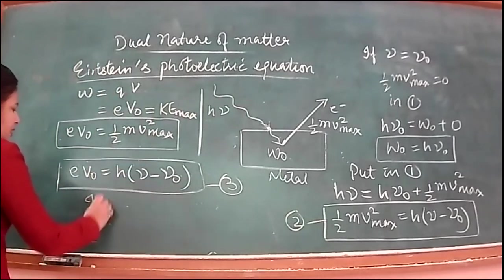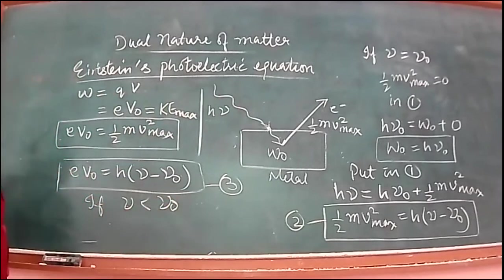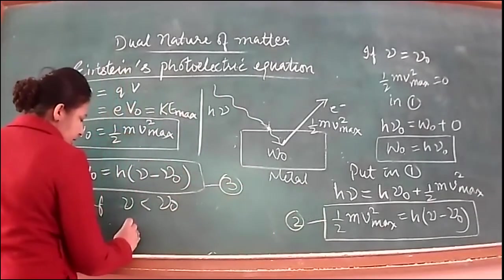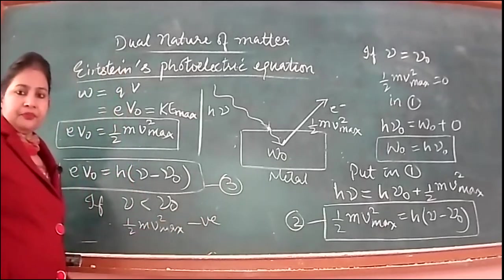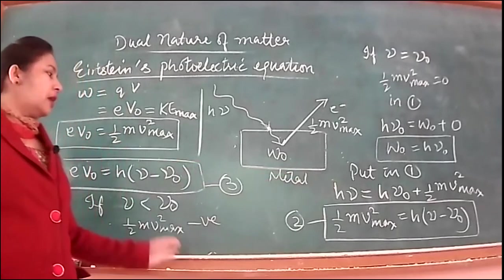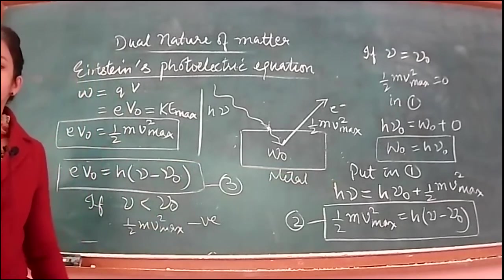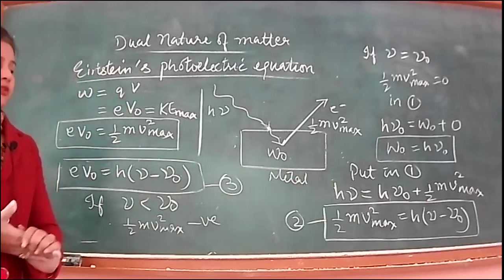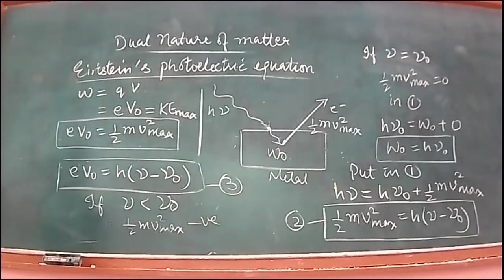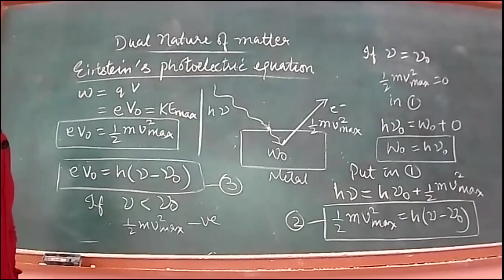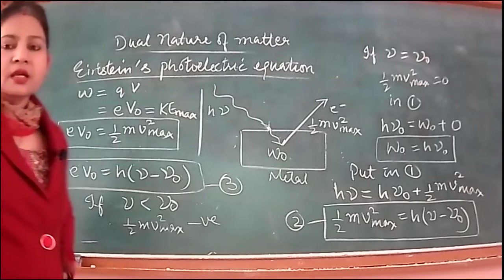As a special case, if the frequency of incident radiation is less than the threshold frequency, equation 2 gives a negative maximum kinetic energy, which is not possible. Kinetic energy can never be negative. That is why photoemission takes place only above threshold frequency — below threshold frequency, no photoemission takes place.